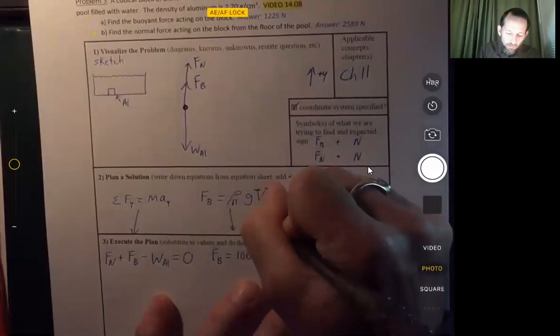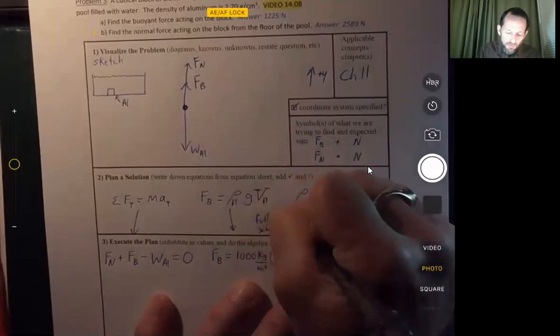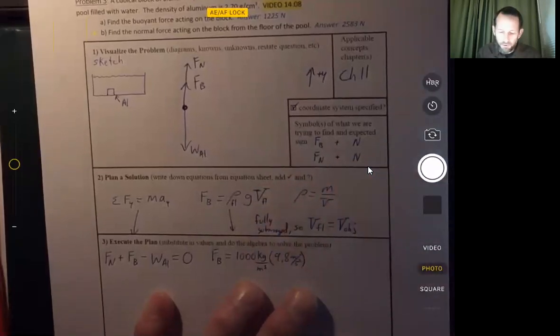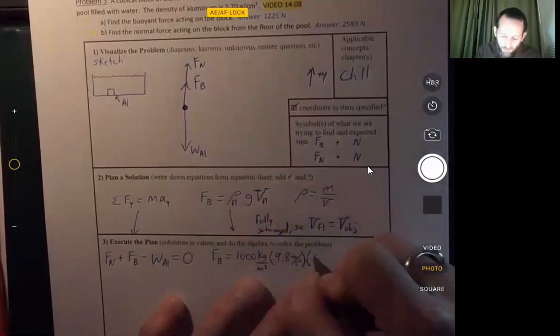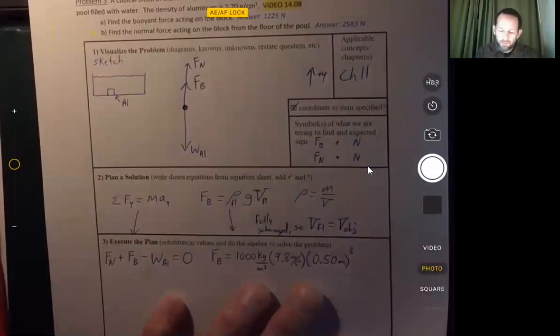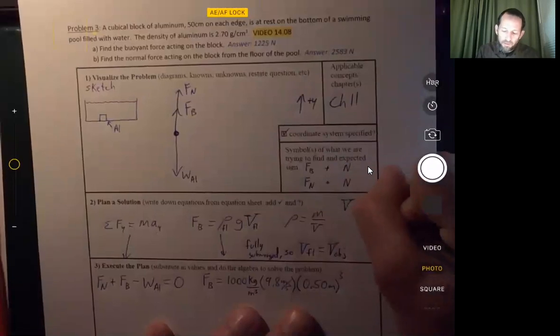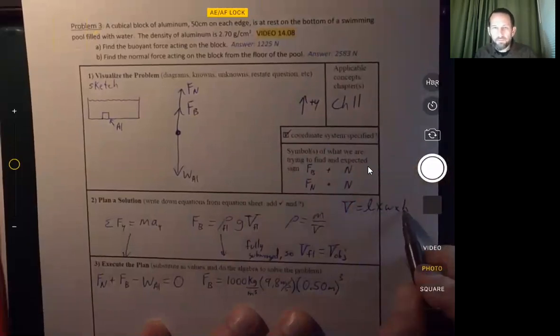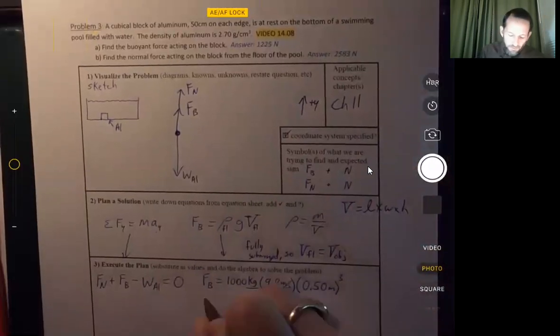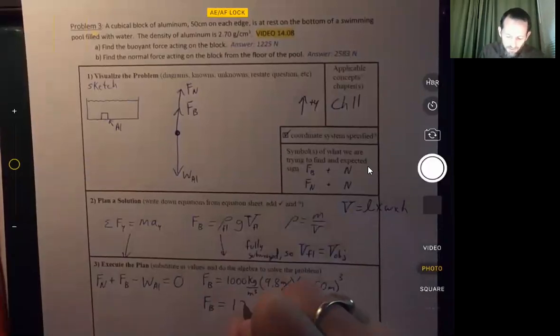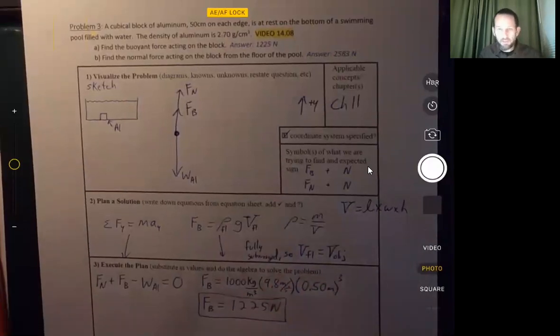Times 9.8 meters per second squared times the volume of fluid displaced. Well, in this case, it's fully submerged. The block is fully submerged. So the volume of fluid displaced does equal the volume of the object. And that was not true in examples one or two. All right, so in this case, the volume of the object is 0.50 meters cubed, because this is a cubicle block of aluminum. So remember the volume, you go length times width times height. And so 50 centimeters times 50 centimeters times 50 centimeters. And 50 centimeters is half a meter or 0.5 meters. So we can get our buoyant force from this. 1000 times 9.8 times 0.5 cubed, and we get 1,225 newtons. And that matches up to the answer up above, which is a good sign.